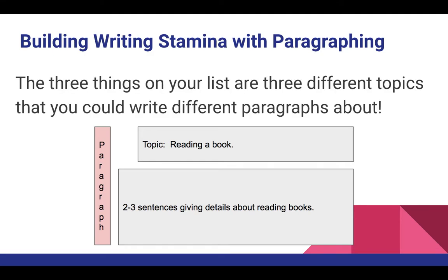The three things on your list are going to be the three different topics that you could write different paragraphs about. So here we have an example. The topic would be reading a book, and then you would write two or three sentences giving details about reading a book for your first paragraph.